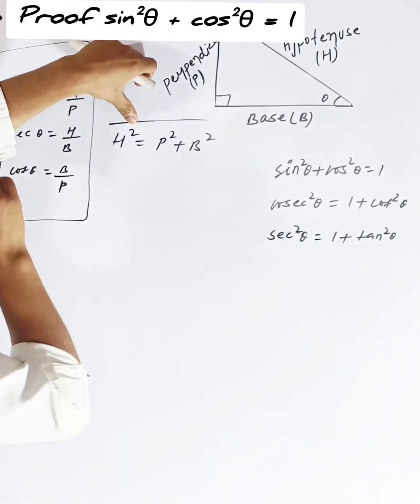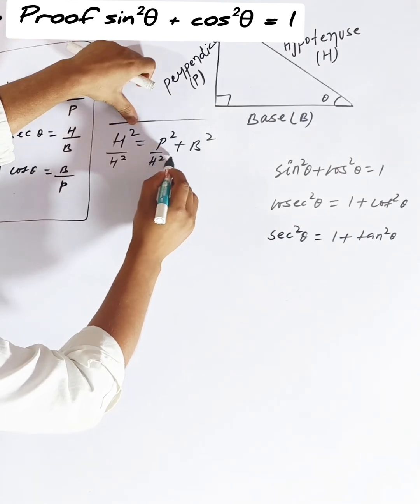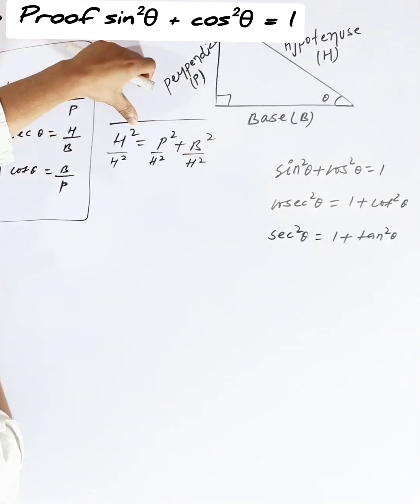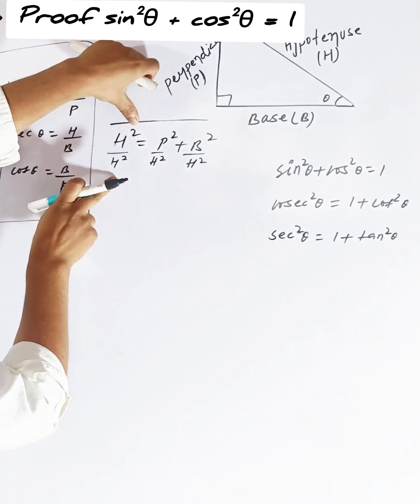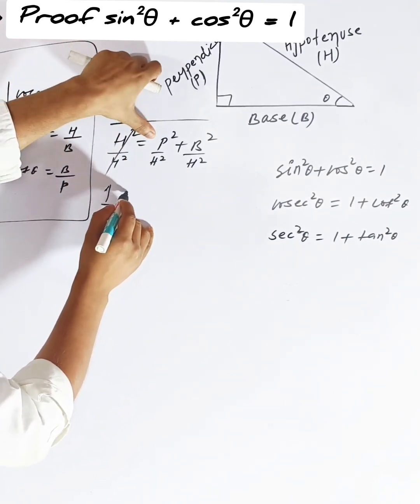Now it's a simple thing. If I say do one thing, divide all of them by the square of the hypotenuse. Will there be any problem? Divide these three terms by the square of the hypotenuse. So this is going to be cut and become one, brother. This is equal to...